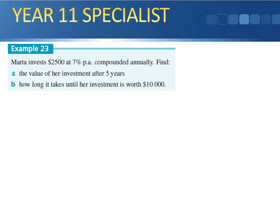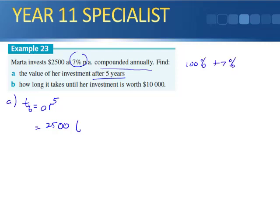Example 23: Maria invests $2500 at 7% per annum, compounded annually. Find the value of her investment after 5 years. So if we've got after 5 years, we want T of 6. So we have AR to the 5, which means we've got 2500 times, now 7% on top of what she had, so she's got the 100% plus another 7%, she's got 107%, which we write as 1.07. That's what that happens, to the power of 5. And when we work that out, we get 3506.38.